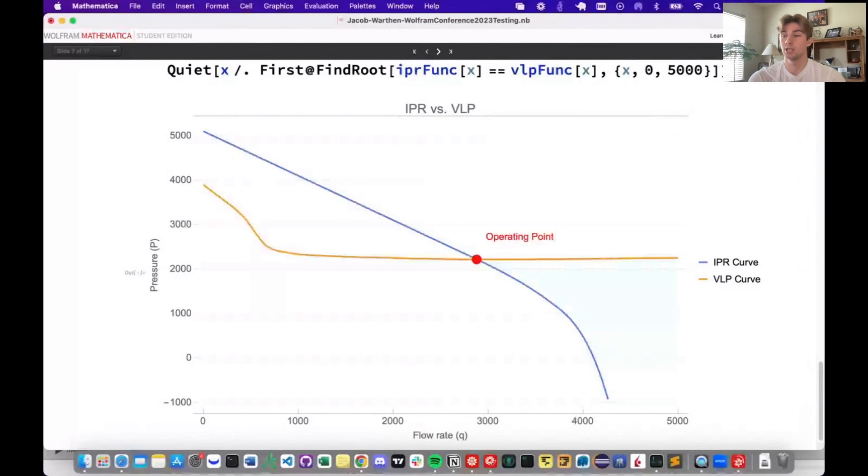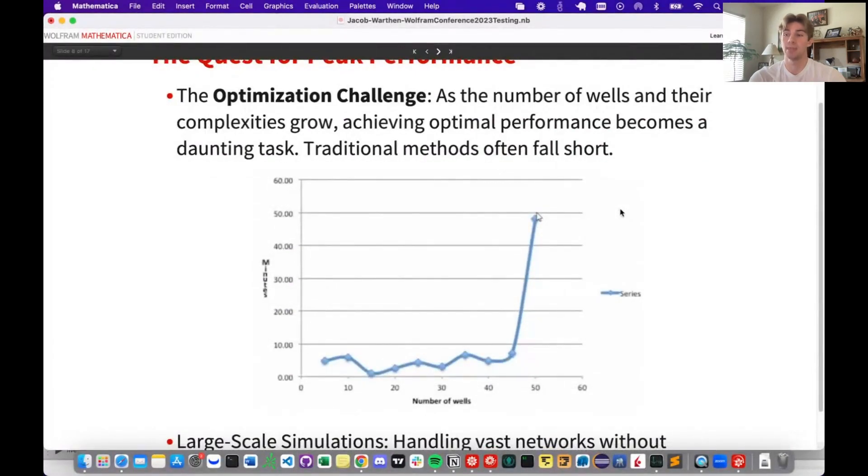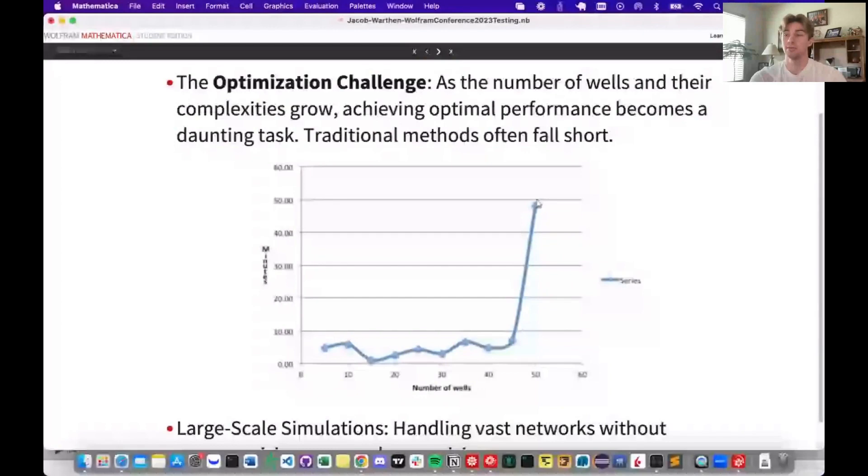In the orchestra of oil production, every well plays a pivotal role, but as the ensemble grows with more wells, varying compositions, and reservoir conditions, ensuring every member performs at its peak becomes a mammoth challenge. Just look at this graph. The time taken to achieve optimal performance increases exponentially as the number of wells grows. Traditional methods, while reliable for smaller operations, just don't scale effectively. But in this age, we have the power of large-scale simulations. These tools not only handle vast networks, but do so without sacrificing speed or precision. Picture a master conductor with an intricate understanding of every instrument, optimizing the sound of the entire orchestra in real time. Through these simulations, we can implement various architectures to optimize each well.